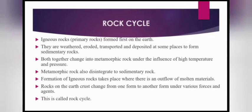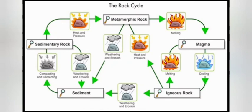Rocks in the earth's crust can be changed from one form to another under various forces — this is called the rock cycle. A picture has been provided for better understanding of how the cycle takes place, showing the transformation from one rock form to another.